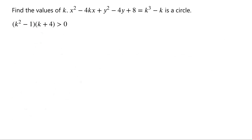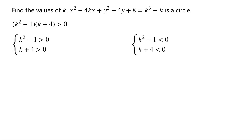If the product of two terms is greater than 0, then the two terms must have the same sign. So we have either: k squared minus 1 is greater than 0 and k plus 4 is greater than 0; or k squared minus 1 is less than 0 and k plus 4 is less than 0.